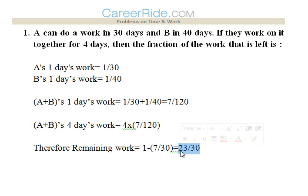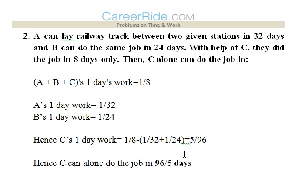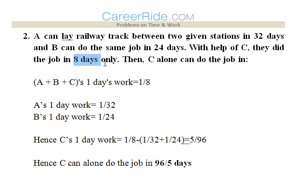Second question: A can lay a railway track between two given stations in 32 days, B can do the same job in 24 days. With the help of C they did the job in 8 days. We need to find how many days C alone would take to do the job. A plus B plus C's one day work would be 1/8, as they all complete the work in eight days.